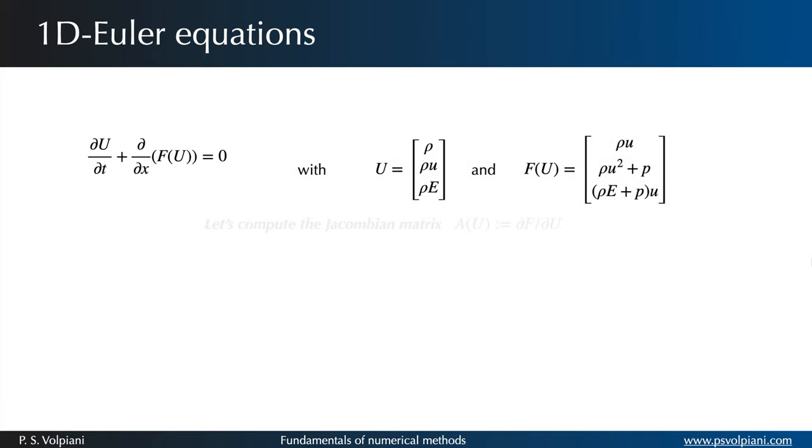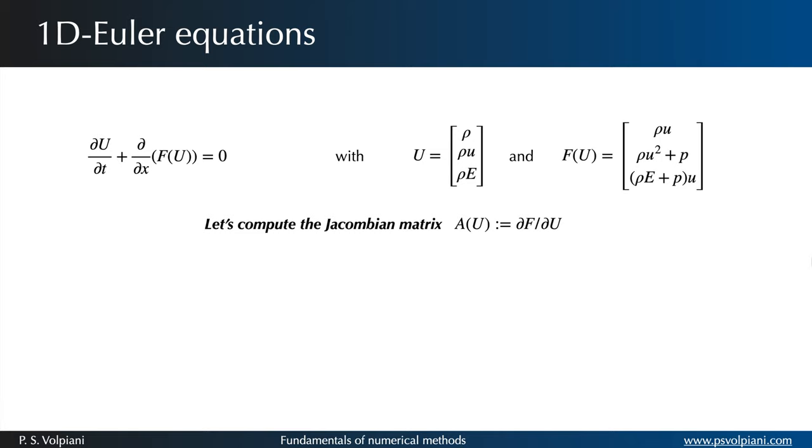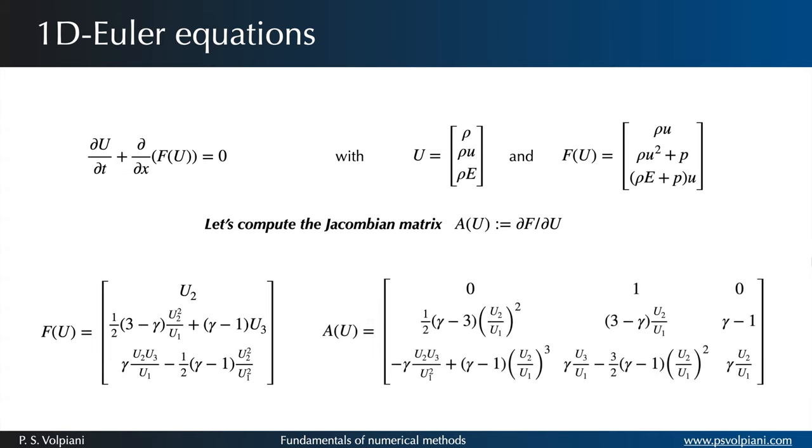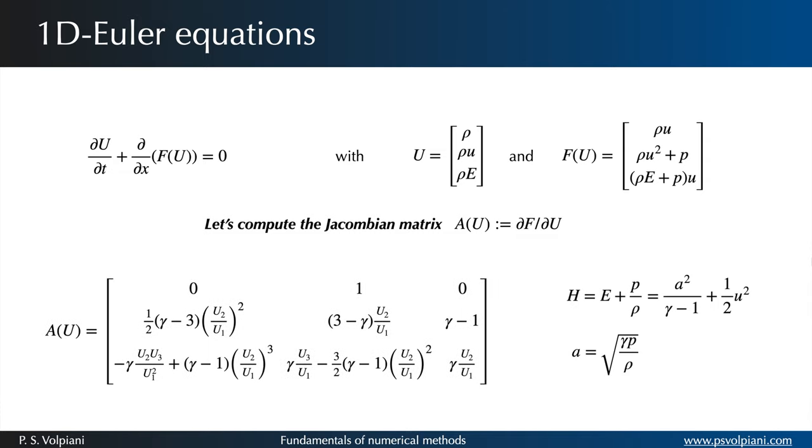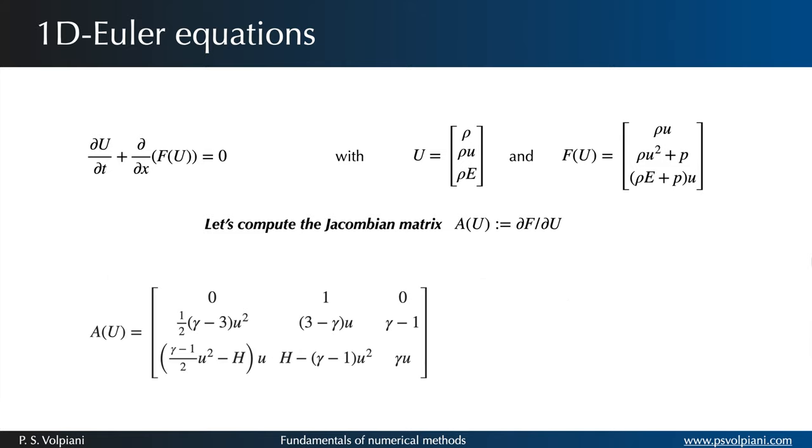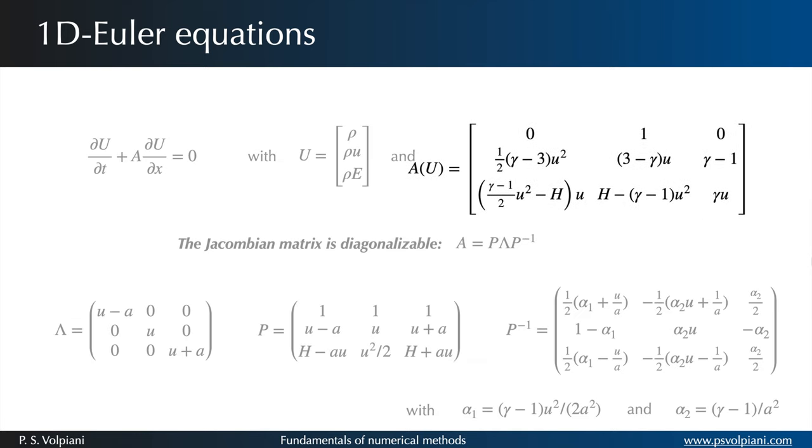The Jacobian matrix can be computed by first expressing the flux vector in terms of the conservative variables. If we introduce the total specific enthalpy H and the sound speed a, we can rewrite the Jacobian matrix as follows and express the Euler equations in quasi-linear form.